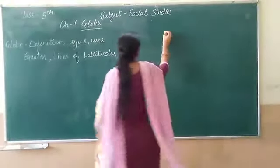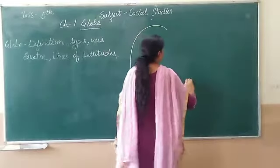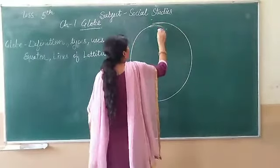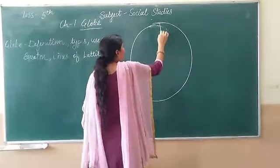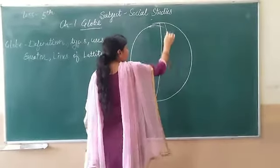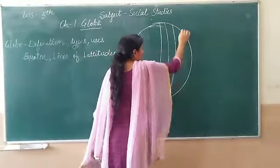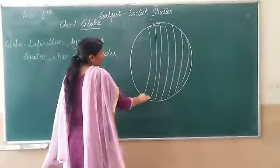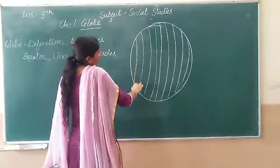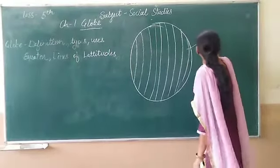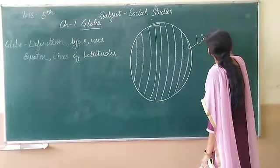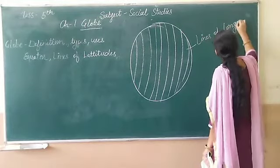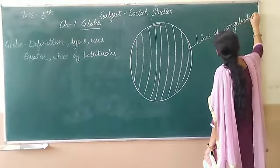Look at the board. This earth represents the Earth, and these lines are the lines of longitude. These are called lines of longitude and meridians.